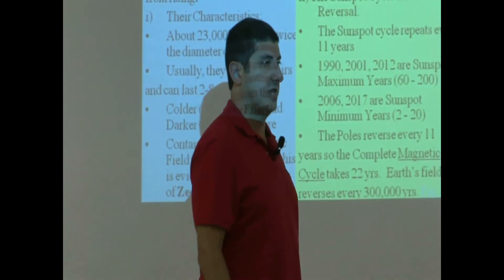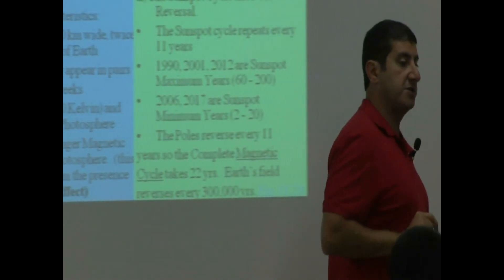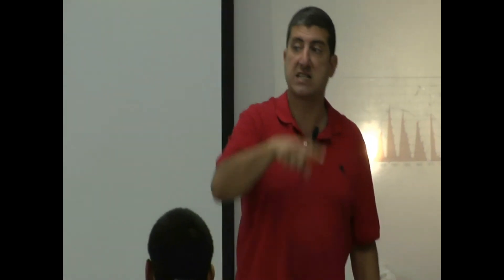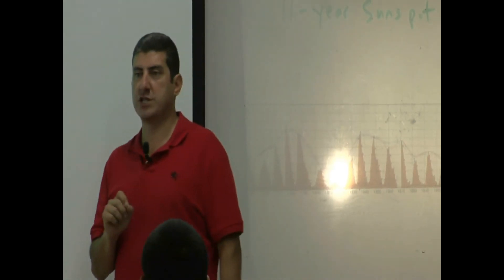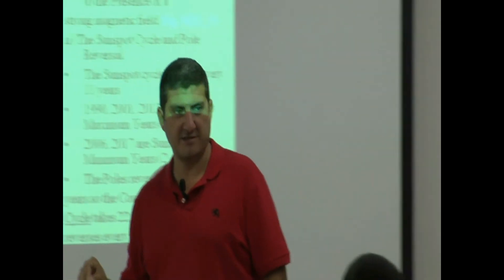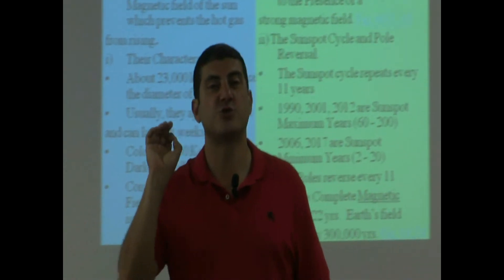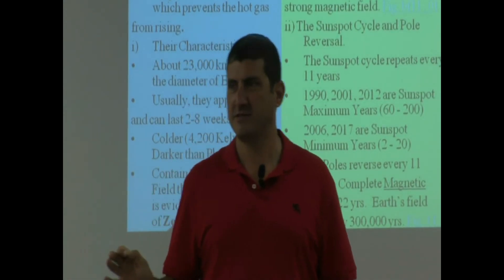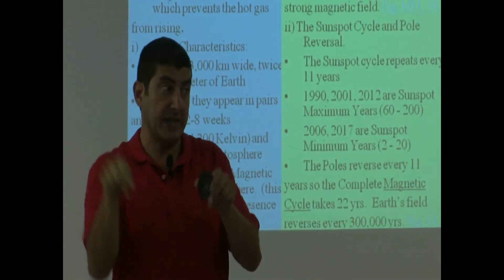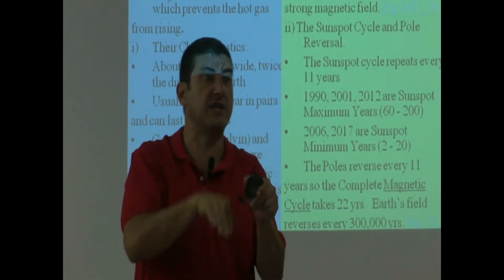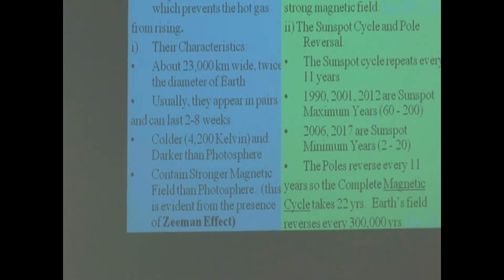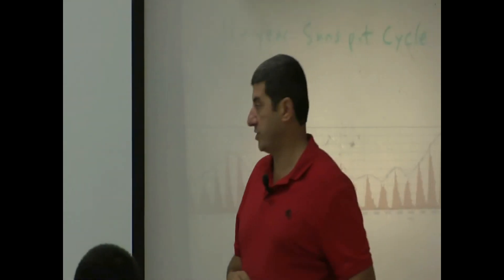So if I ask you on the test: how many years does it take for the magnetic cycle to repeat — the whole magnetic cycle — that's usually a trick question, because a lot of students want to put 11 years. The answer is 22 years. The sunspot cycle repeats every 11, but the magnetic cycle repeats every 22, because every 11 years it reverses itself.